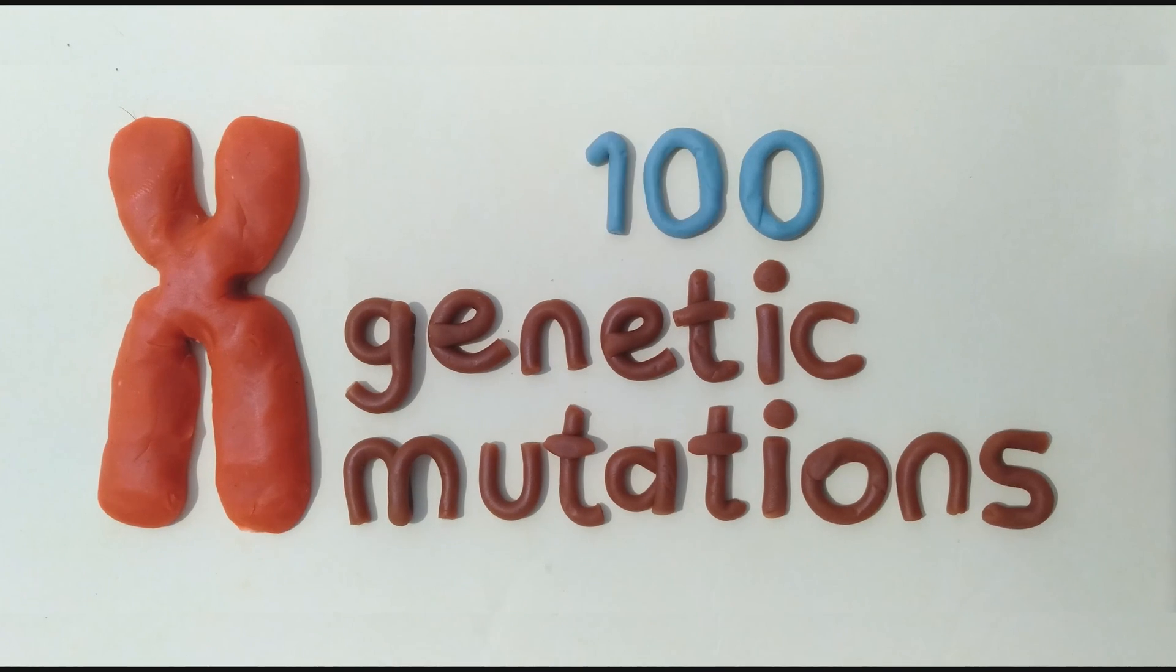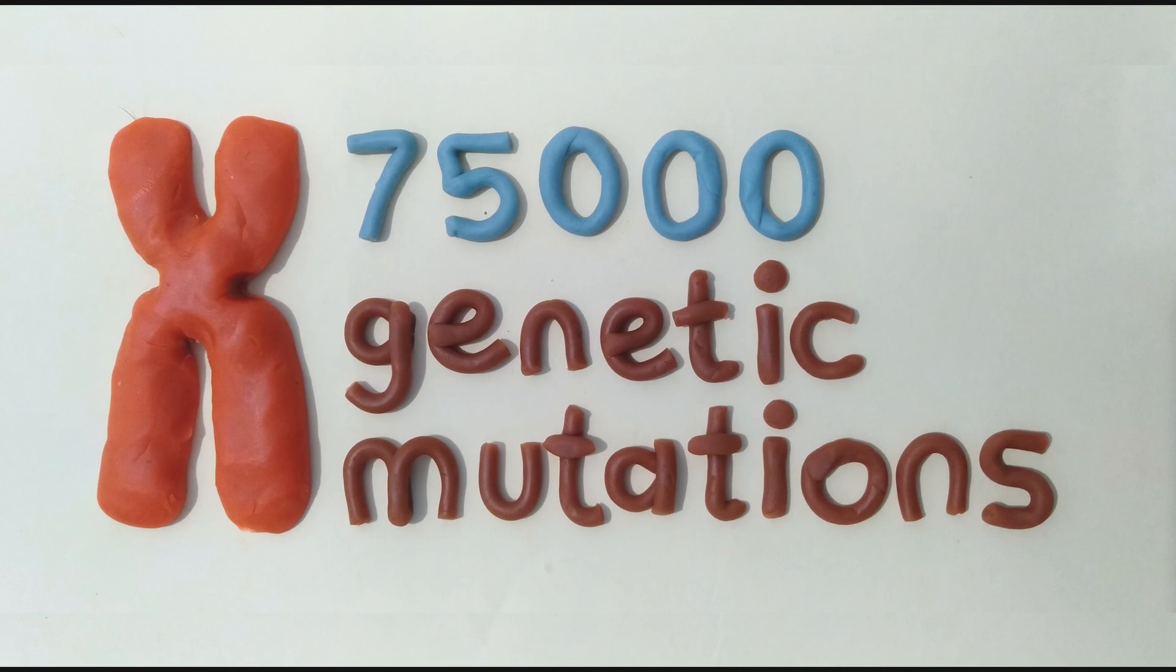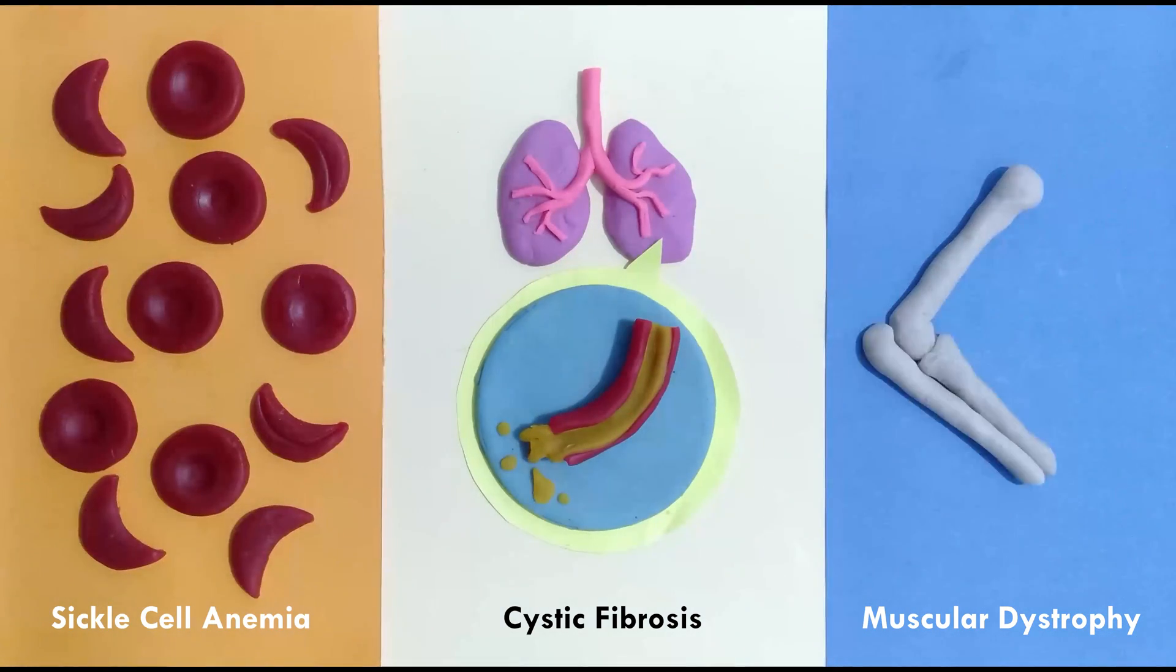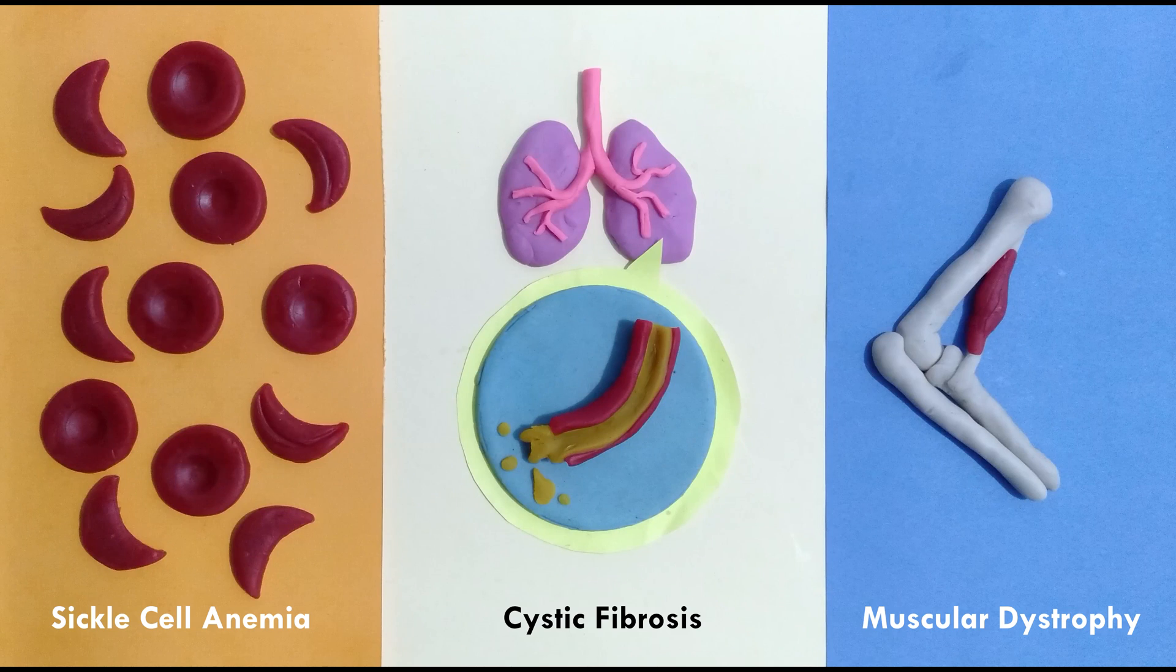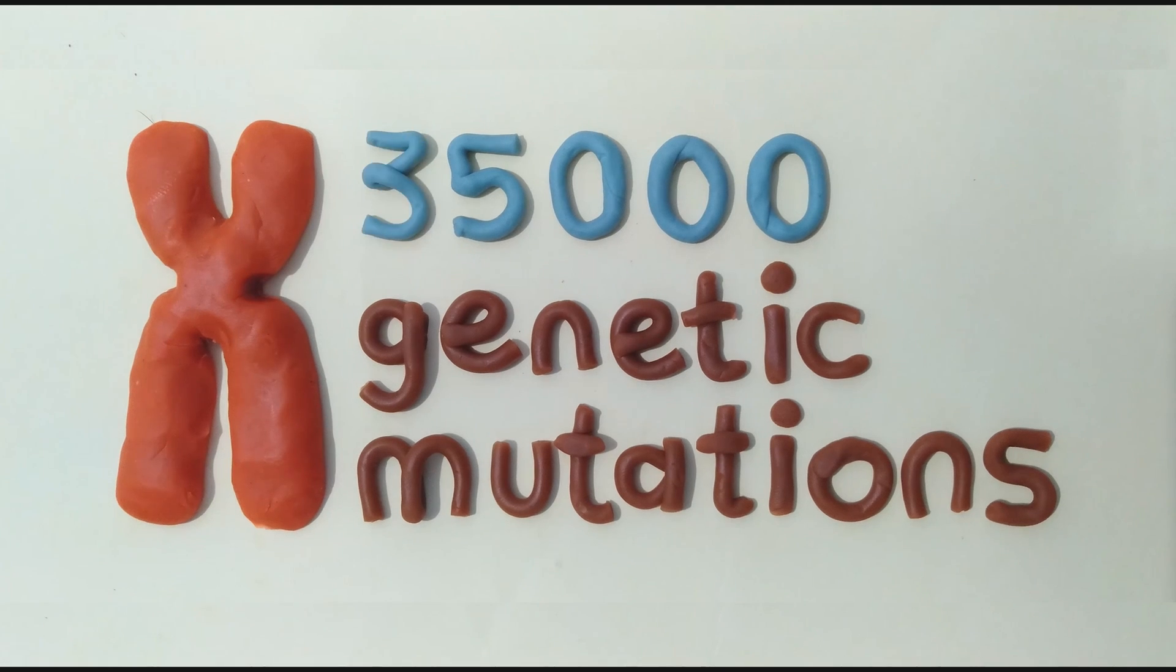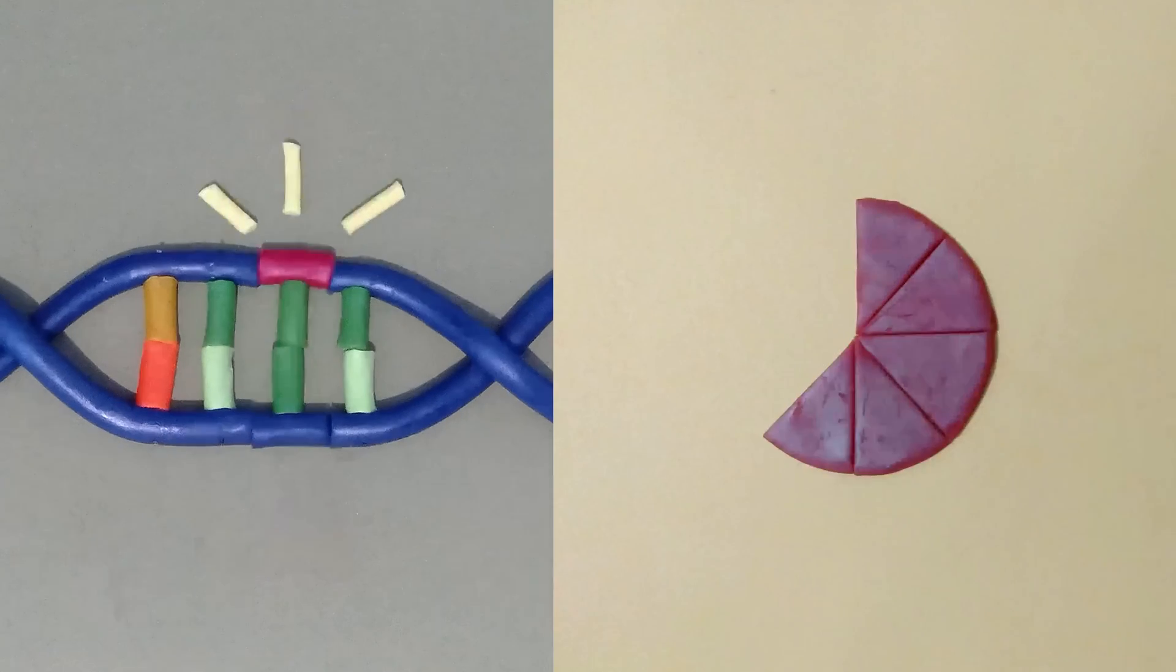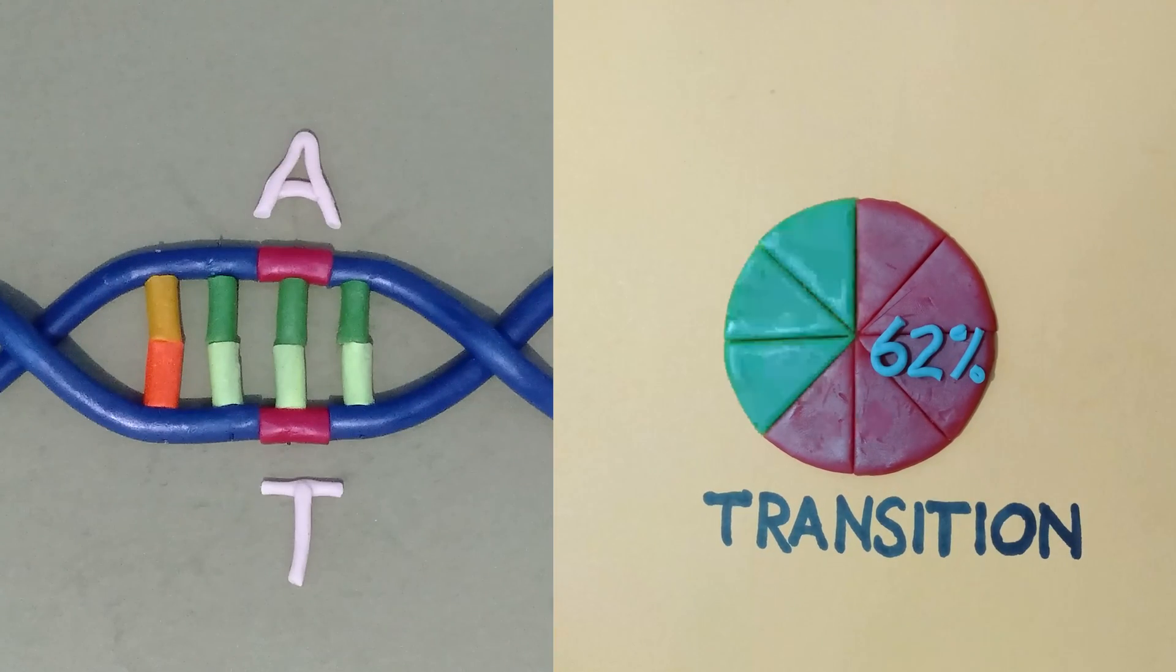More than 75,000 genetic mutations are linked to human diseases like sickle cell anemia, cystic fibrosis, or muscular dystrophy. Almost half of these, around 35,000 genetic variants, are point mutations, which can be divided into transitions and transversions.